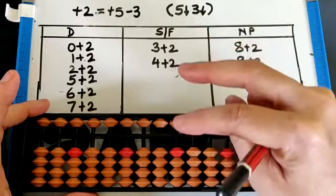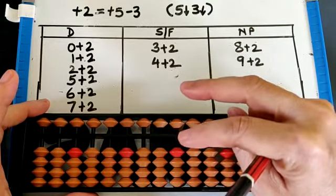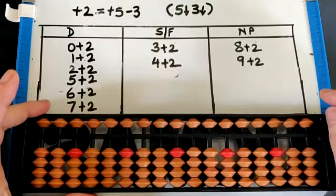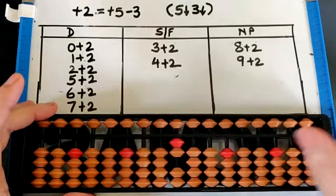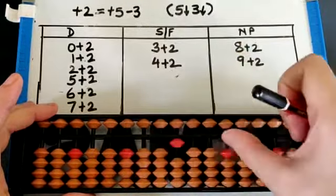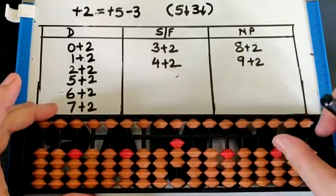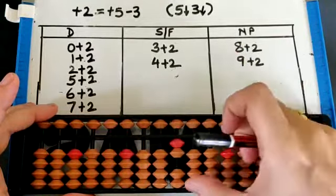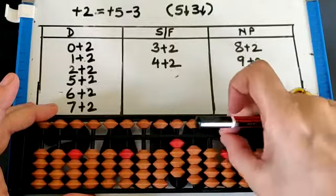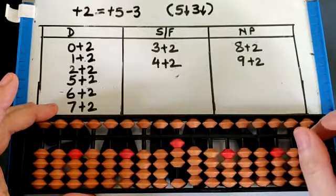Let's check the possibilities. 0 plus 2 directly, then 1 plus 2 directly that is 3. Now 2 plus 2 again directly, that is 4. Now 3 plus 2.